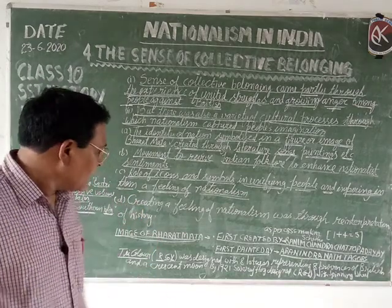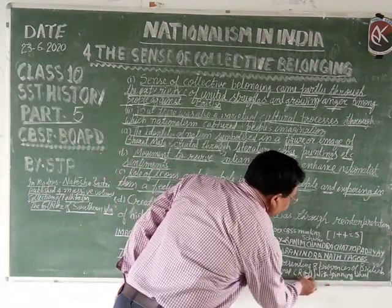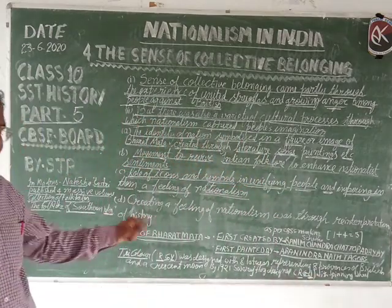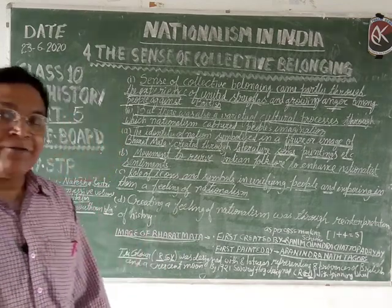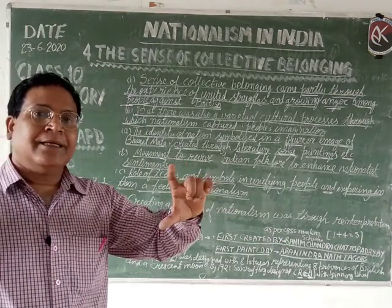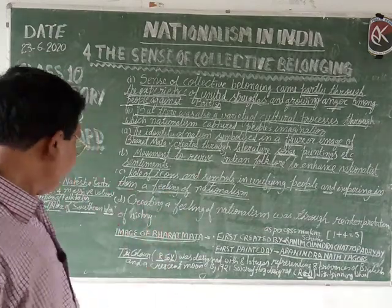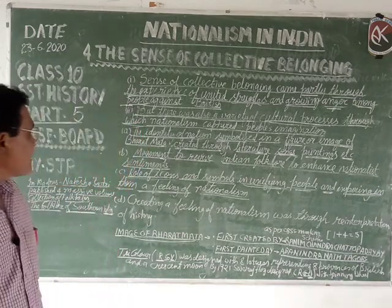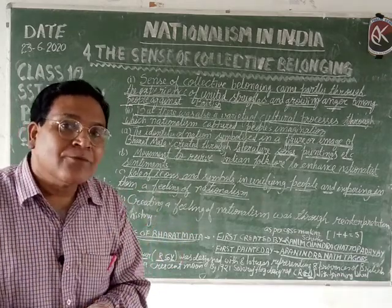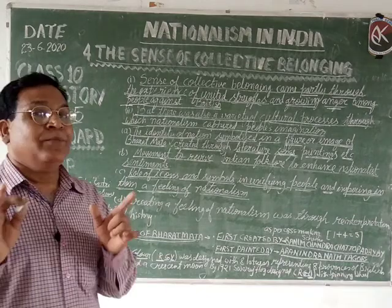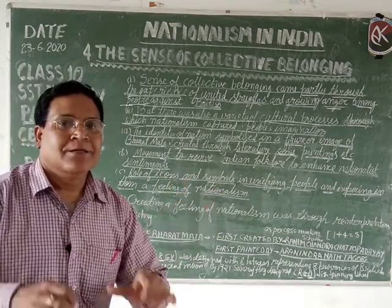By 1921, the Swaraj flag was designed. This Swaraj flag contained red, green, and white colour — quite different from the earlier flag, which had red, green, and yellow. At the centre it contained a symbol of the spinning wheel — the symbol of prosperity and peace. Icons and symbols became more fruitful in creating the sense of collective belonging, and people started gathering together, becoming united, and making the struggle stronger and stronger.